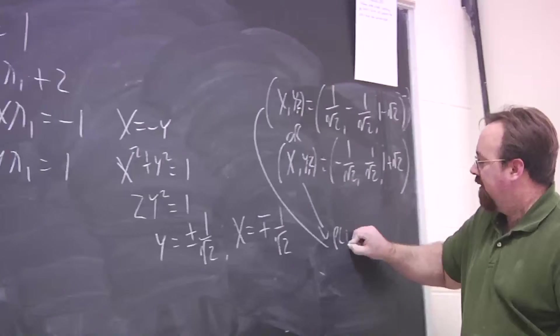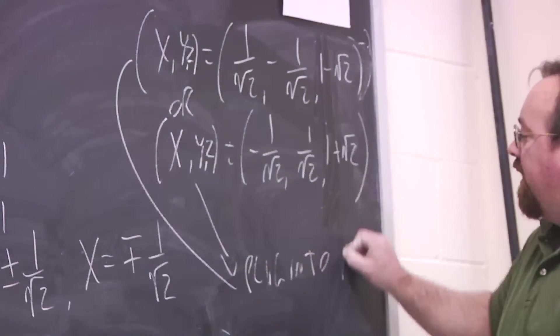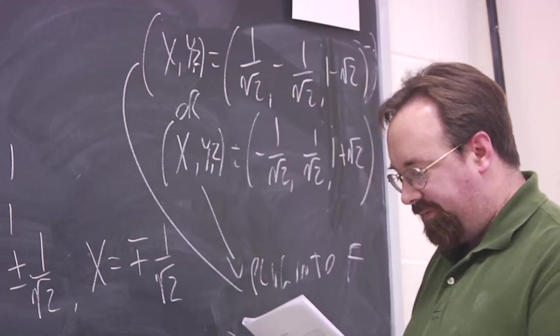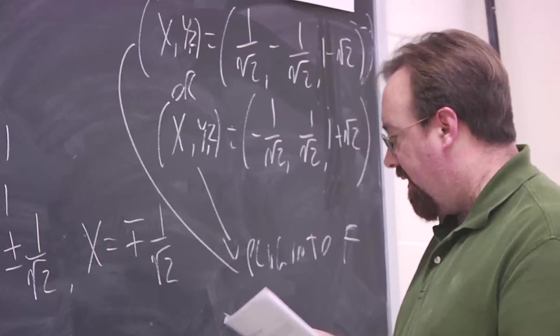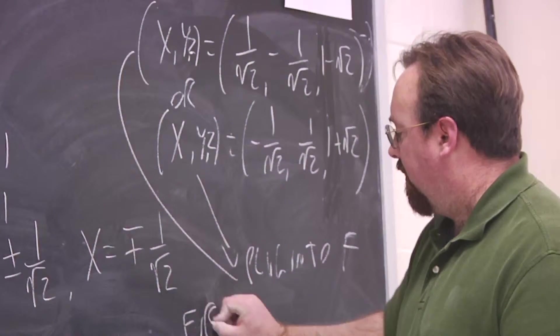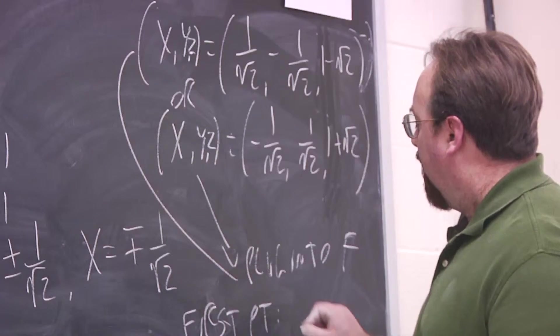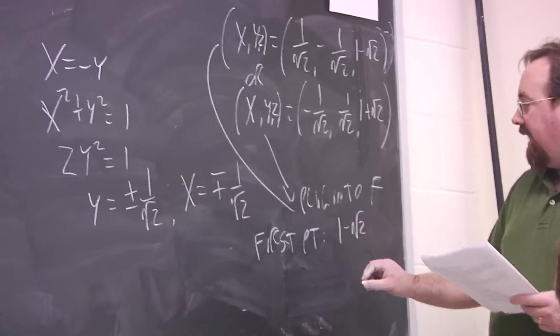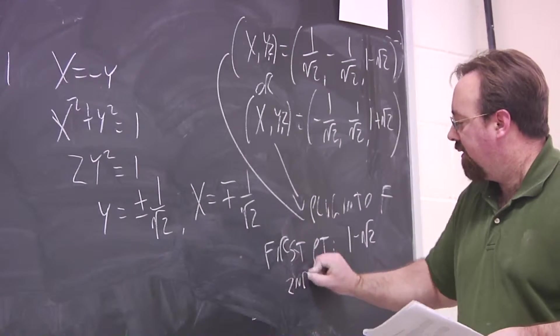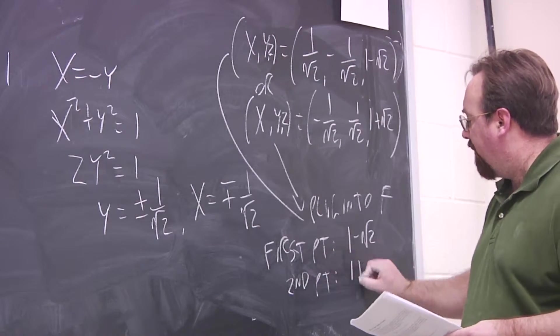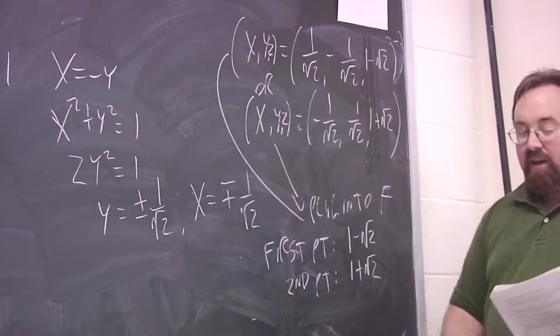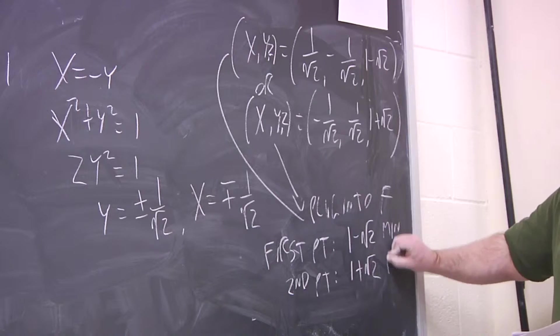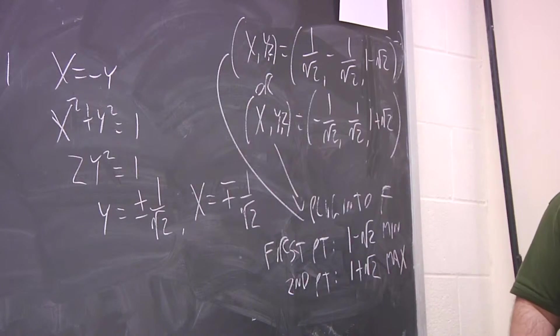Plug both of these points into F. For the first point, the value of F that you get is 1 minus the square root of 2, and the second point, 1 plus the square root of 2. So this is the constrained min, the other is a constrained max.